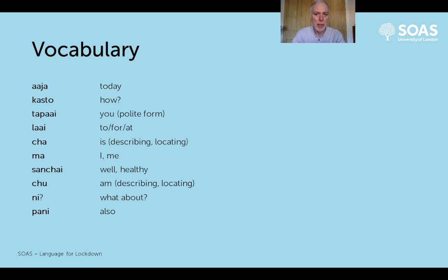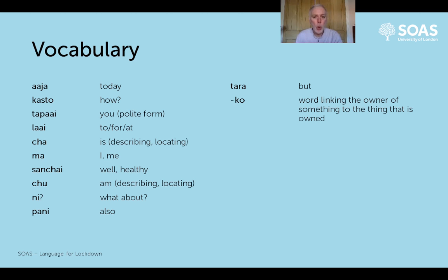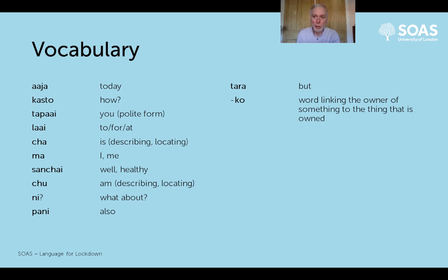'Anni' is the word that means 'also'. 'Tara' is the word that means 'but'. 'Ko' is not a word that really works on its own - it's always joined to something else, and it links the owner of something to the thing that's being owned. It sits between the owner and the owned in the same way that an apostrophe-s does in English. So 'Michael's house', for instance, is 'Michael ko gar', 'gar' being the word for 'house'.